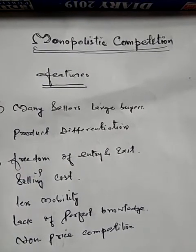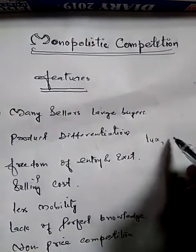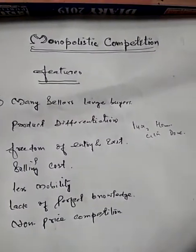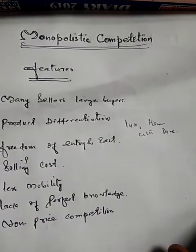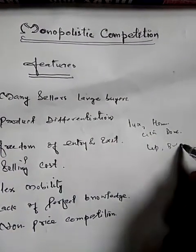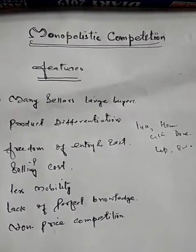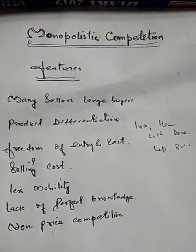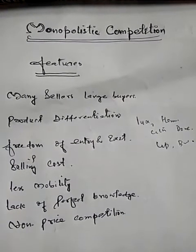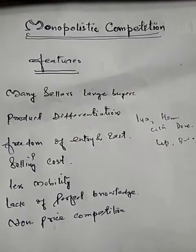For example, take tea: we have several brands — Lipton, Brooke Bond, Taj Mahal, and many others. Similarly with toothpaste, you will find many brands. Tea, toothpaste, and soap are essentially the same type of product, but differ due to product differentiation. Because of this product differentiation, each firm can decide its price and policy independently.